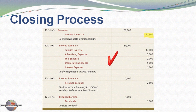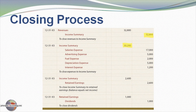The next journal entry reflects the closing of the expense accounts. Because the expense accounts have debit balances, we need to credit them to close them — to zero them out — and in turn debit income summary for the total of the expenses, $30,200. Comparing the two entries, you see there's $32,800 credited to income summary for all revenues and $30,200 debited to income summary for all expenses. That gives us a net balance of $2,600 in the income summary account, which corresponds to the net income of the business.